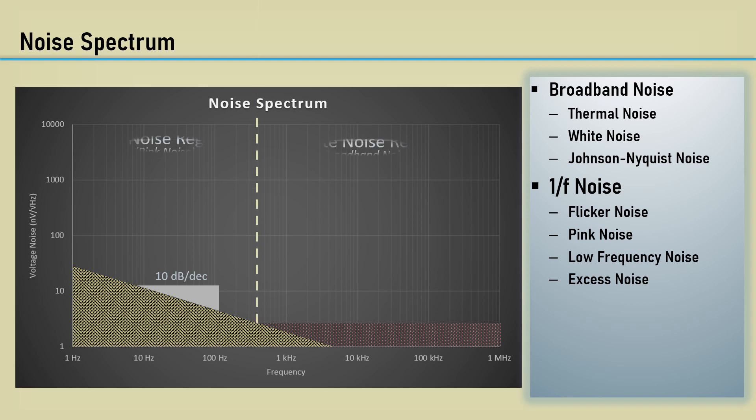The noise spectrum is split into two basic regions: the 1 over F region and the white noise region. The place on the noise floor where they intersect is called the flicker corner.